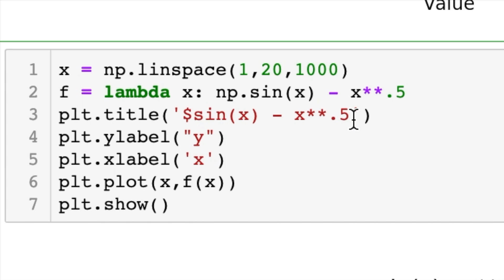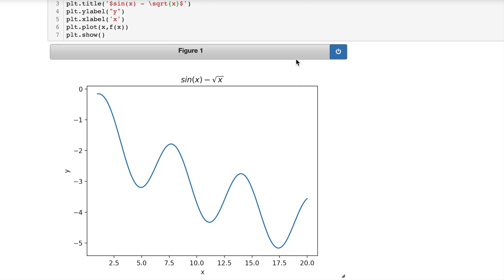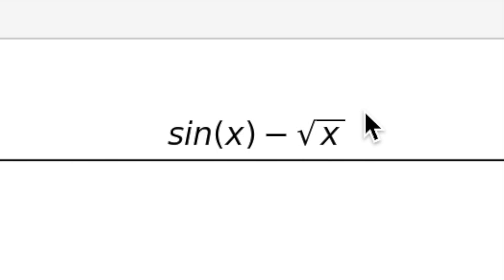We'll go ahead and start off by putting dollar signs around all of it and we'll do slash square root and in brackets what goes under the square root which is just X. And let's run that. Excellent. See that is a much cleaner better presentation.